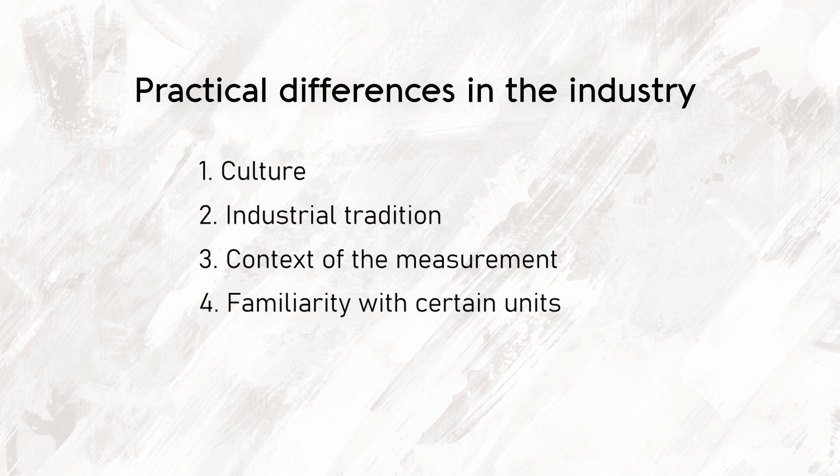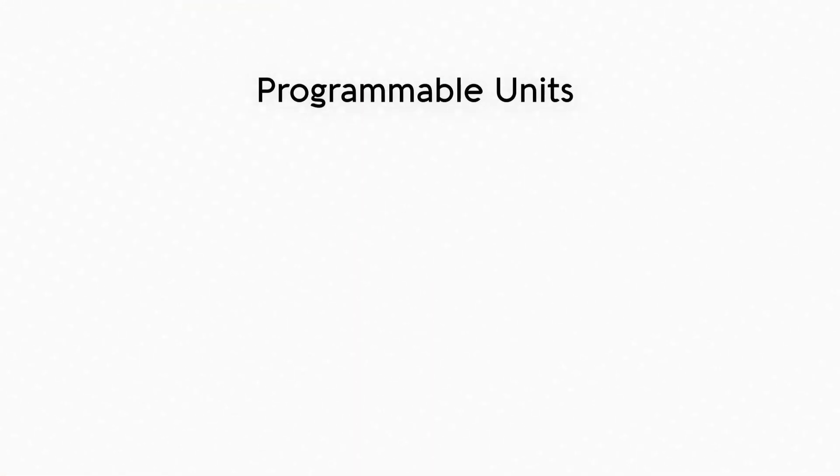To meet these diverse needs, we offer the flexibility to use other measurement units such as millimeters of mercury, inches of mercury, and pounds per square inch. This adaptability allows you, as a customer, to easily integrate our vacuum chambers into your existing processes without needing to perform unit conversions.